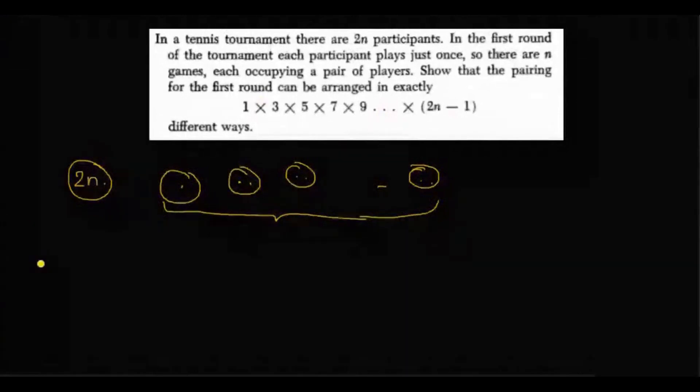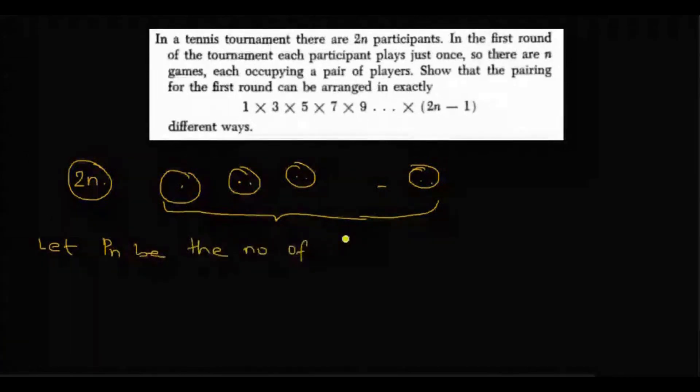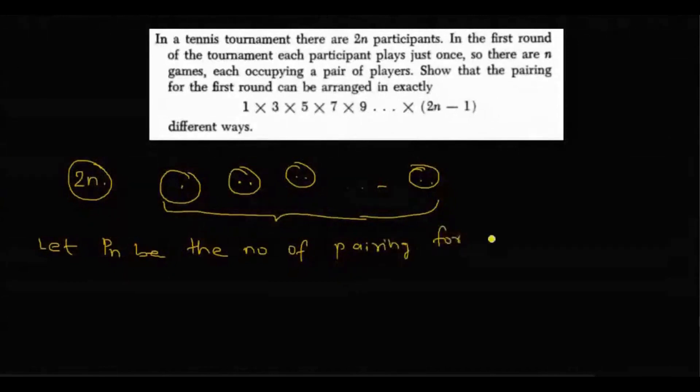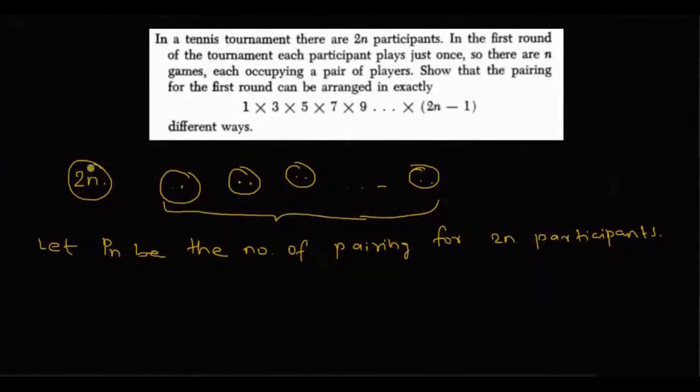So let Pn be the number of pairings for 2n participants. Now if you are a participant then what would happen? Suppose there are 2n many participants and you are one of them.